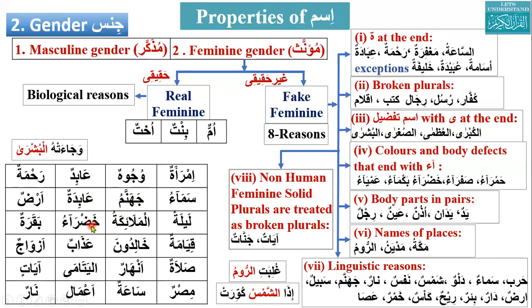Khadra'u — feminine, because it is a color. Khadra'u is green. Makkatun — feminine. Kiyamatan — feminine, ta marbuta. Manal asked about a word — does it follow any of these rules? No. So it is masculine. Khalidun means those who live forever — it is a normal plural, not a broken plural, so it is masculine. 'Azab — masculine. Azwaj — feminine, because it is a broken plural (zawj is singular, azwaj is plural). Salah — feminine, ta marbuta. Anhar — Nahar is singular, its plural is anhar, which is a broken plural, so it is feminine. Nahar is river, anhar is rivers.